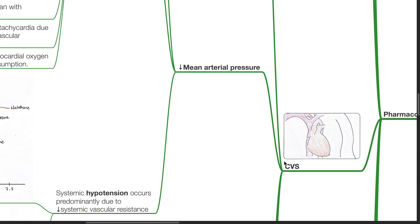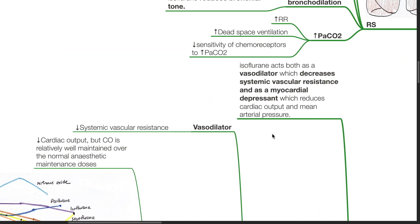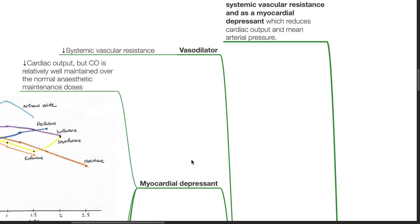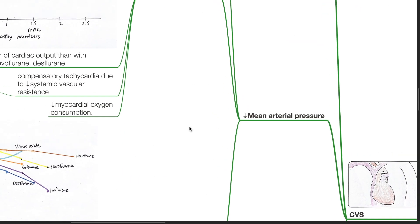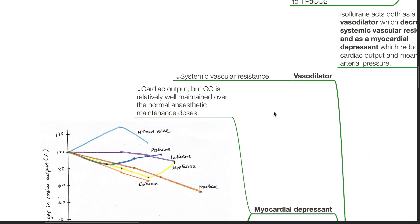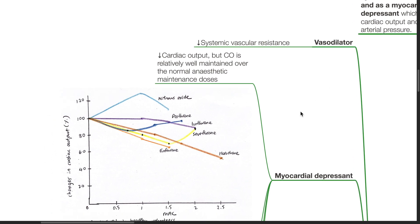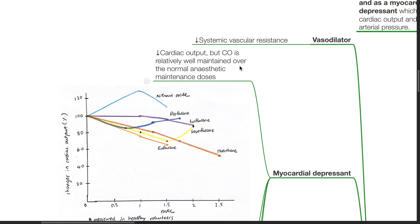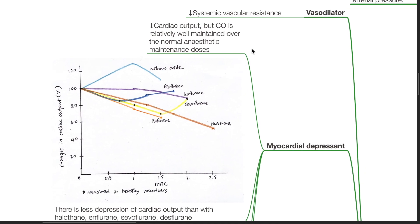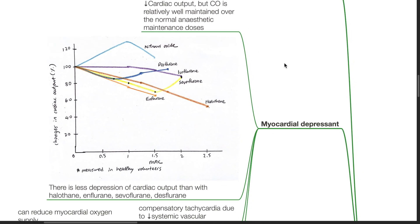Cardiovascular system. Isoflurane acts both as a vasodilator which decreases systemic vascular resistance and as a myocardial depressant which reduces cardiac output and mean arterial pressure. Decrease in mean arterial pressure is secondary to decreased systemic vascular resistance by the vasodilatory effects of isoflurane. Cardiac output is relatively well maintained over the normal anesthetic maintenance doses of isoflurane.